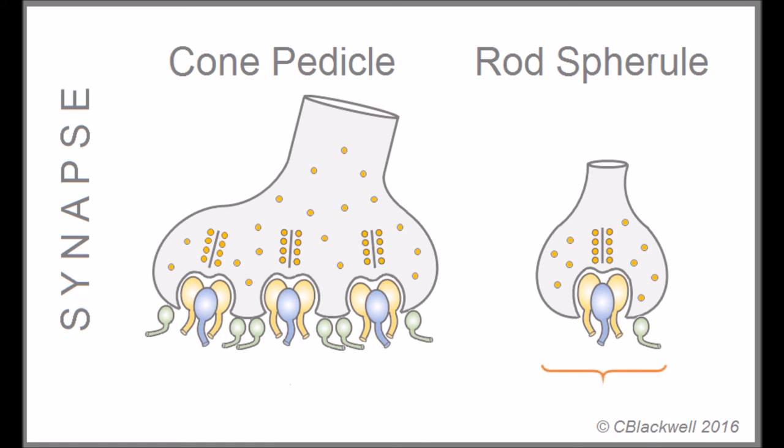Specifically, the yellow bulbs represent the ends of horizontal cell axons invaginating into the synapse. The blue bulbs represent the end of an on-bipolar cell. This grouping typically occurs as this trio arrangement called a triad. The green bulbs represent the ends of off-bipolar cells.